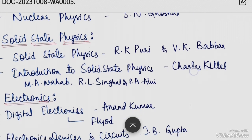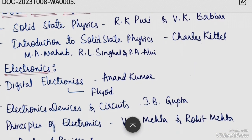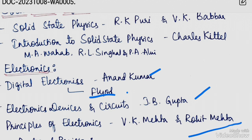The next subject is Electronics. Recommended books include Digital Electronics by Anand Kumar, and Digital Electronics by Floyd. Also recommended are Electronic Devices and Circuits by J.B. Gupta, and Principles of Electronics by V.K. Mehta and Rohit Mehta. The most important book is Principles of Electronics by V.K. Mehta and Rohit Mehta.